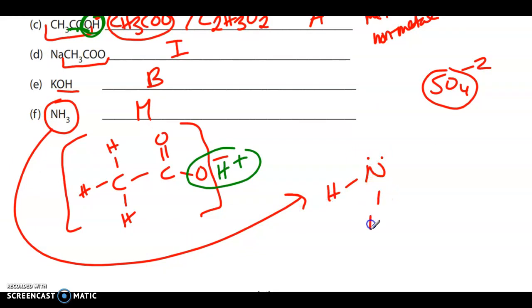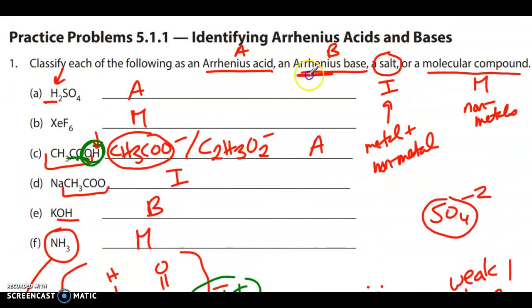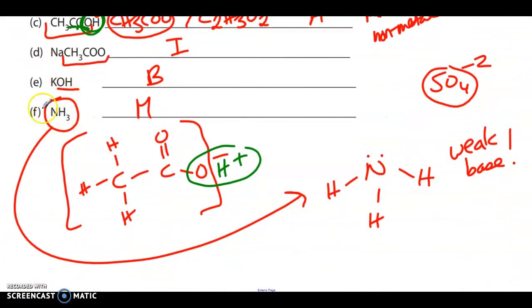So this is our structure for, this is ammonia. Ammonia is actually considered to be a weak base. So when we get into the Bronsted-Lowry theory, we're going to talk about why that is. But for now, they actually were specific here in saying Arrhenius' base. So this is not an Arrhenius' base because it does not have hydroxide.